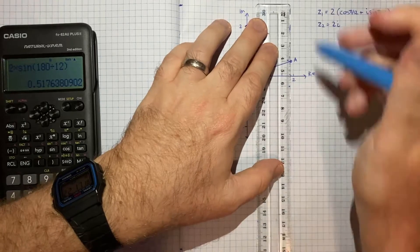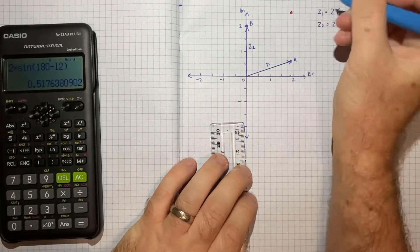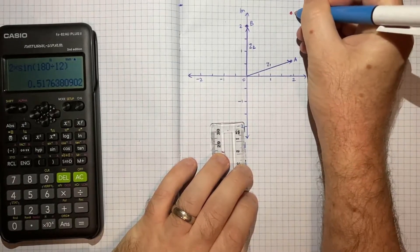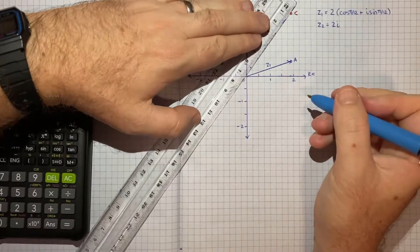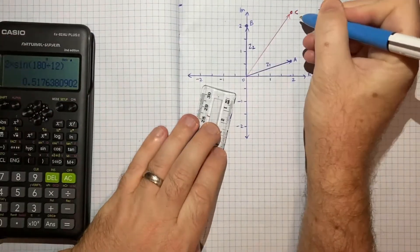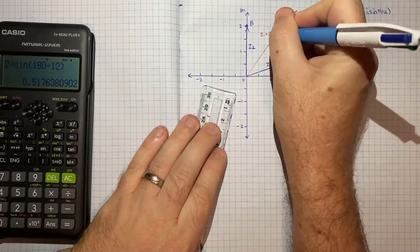And the point here, so I'll call that point C. We've got AB, so I'll call this point C. From the origin to point C, that vector is z1 plus z2.